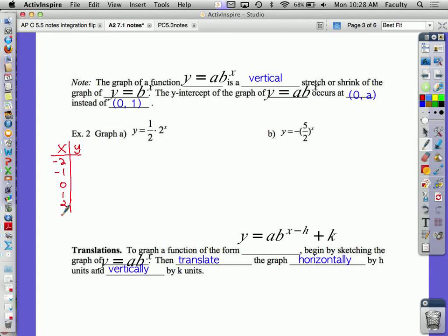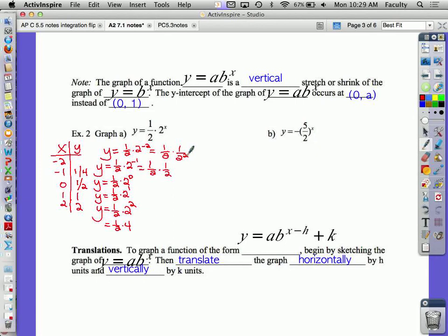I always like to start with the 2 instead of negative because then it makes more sense to me. If I plug in a 2, I do the exponent first. Half of 4 is 2. I get 1 half times 2 to the 1st. Half of 2 is 1. 1 half of 2 to the 0. That's 1 half of 1. That's 1 half. 1 half times 2 to the negative 1. That's 1 half times 1 half. That's 1 fourth. 1 half times 2 to the negative 2. That's 1 half times 1 fourth is 1 eighth.